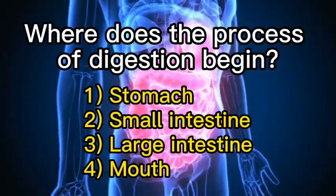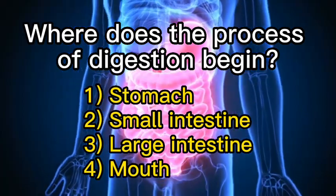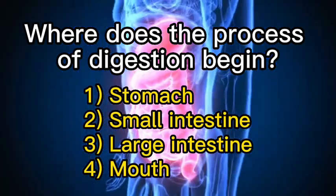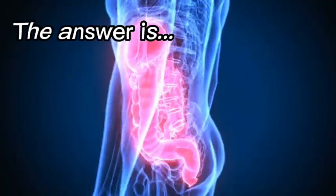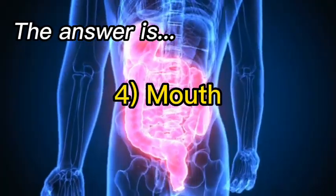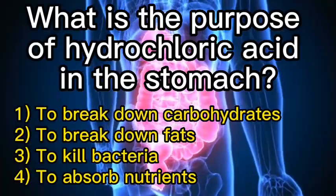Where does the process of digestion begin? One: stomach. Two: small intestine. Three: large intestine. Four: mouth. The answer is four, mouth.